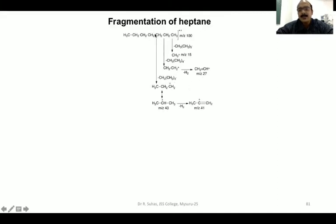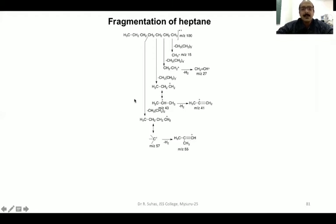The next preferred cleavage gives a propyl cation — CH3CH2CH2+ — along with elimination of a CH3(CH2)3· radical. The propyl cation at m/z 43 is highly unstable and rearranges to the more stable isopropyl cation, where hydrogen migrates so the positive charge moves to the middle carbon atom. We know isopropyl cation is highly stable due to charge stabilization. This m/z 43 ion then loses a molecule of hydrogen to form CH3C≡CH2+ at m/z 41.